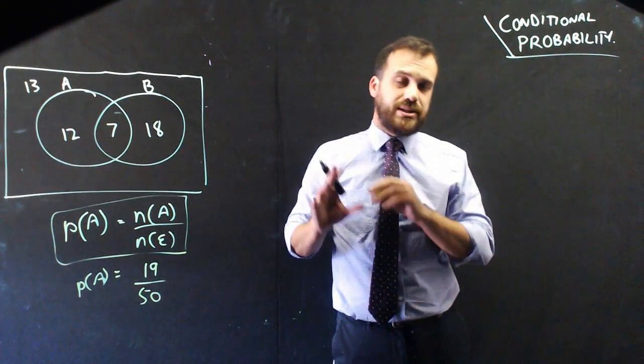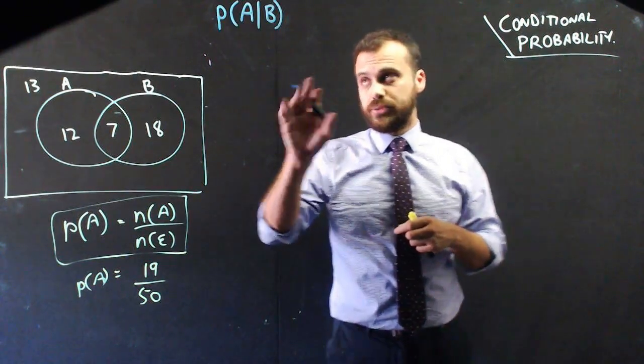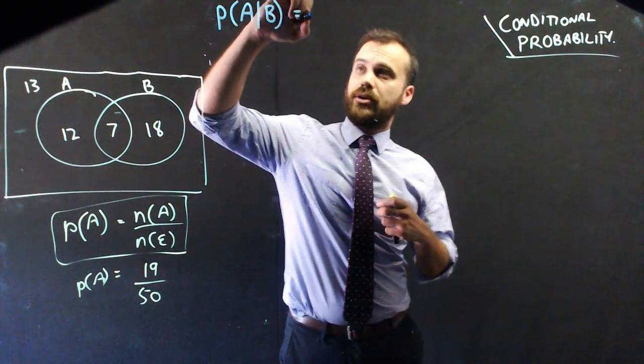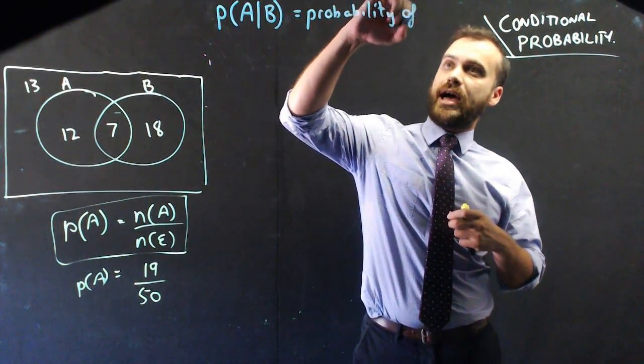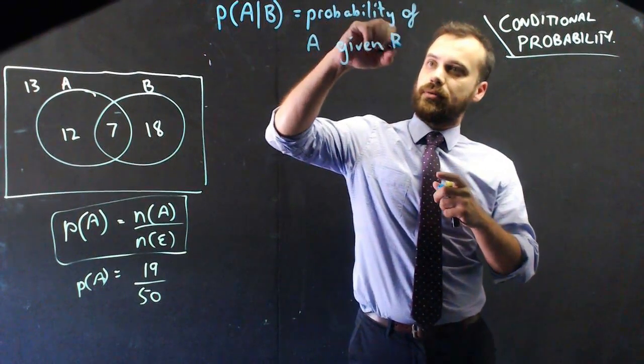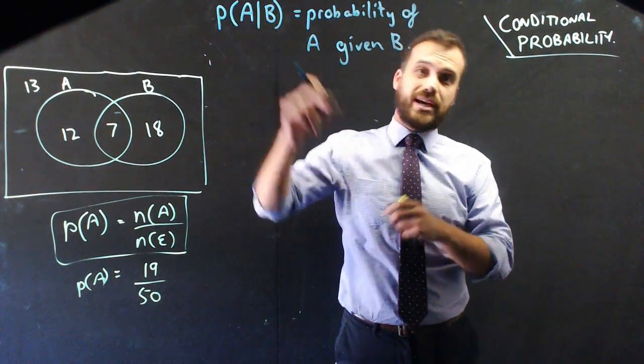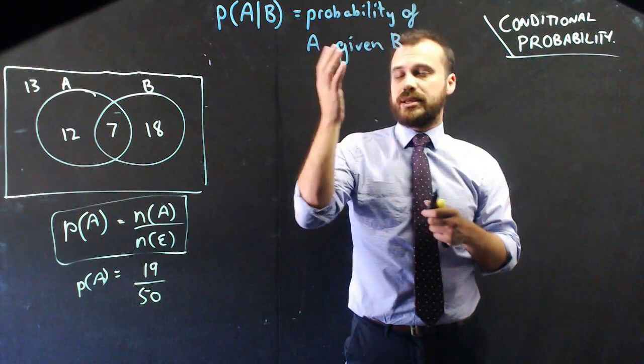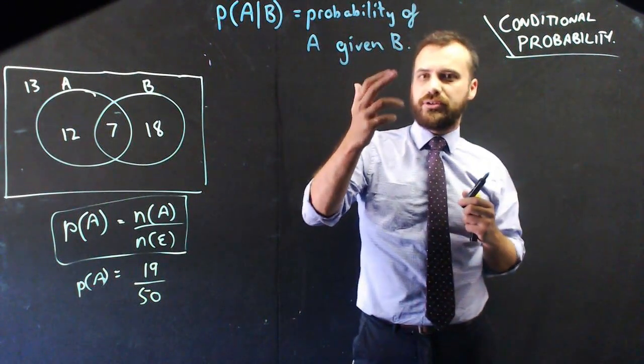But what if we could narrow it down a little bit? That's what conditional probability is all about. Conditional probability is P(A|B), and the way to read that is the probability of A given B. That straight line there, we say as the word given. What it means is: find the probability that somebody is in group A if you already know they're in group B.